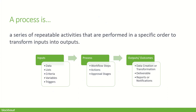A process, very simply, is a series of repeatable activities performed in a specific order to transform an input to an output. In Power Automate terms, the inputs could be data — lists from Razor's Edge NXT — it could be criteria when a certain threshold is met, a variable when something changes within the data, or a trigger such as at a certain time or day of the week when something happens.